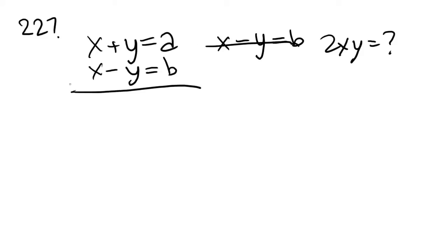Okay, number 227 says if x plus y equals a and x minus y equals b, then 2xy is what? Well, this is going to be a problem where we need to figure out the relation between x and y and a and b. So let's add these together.